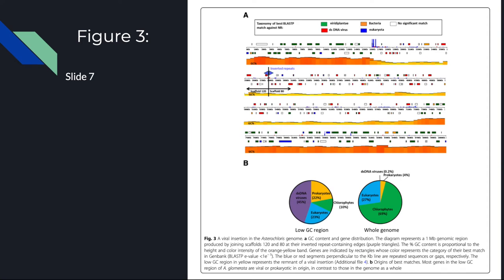In figure three, from their whole genome analysis, the researchers discovered a low GC content region that matches a viral genome. The repeated region of the low GC content are found nowhere else in the genome, the photobiont. Looking at A in figure three, you can see the scaffolding at 120 and 80 with the inverted repeats. The region contains 462 proteins, with 236 of them having a match to a double-stranded DNA virus. The region also has much less introns than compared to other genes in Asterochloris.